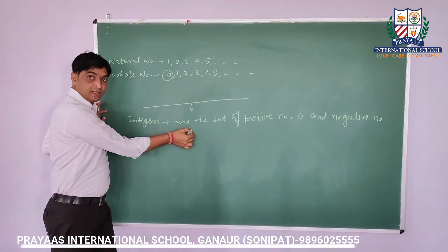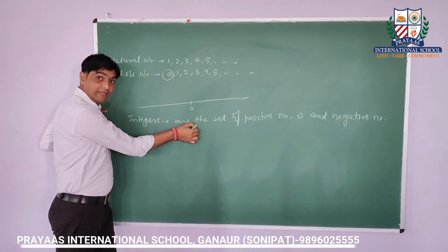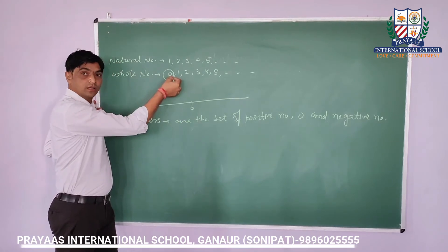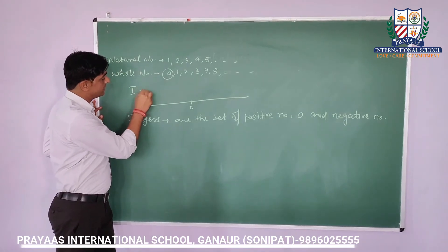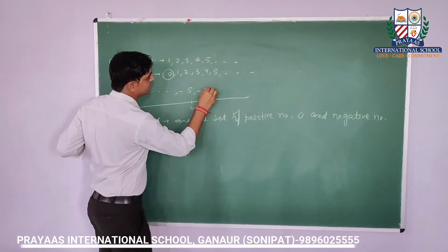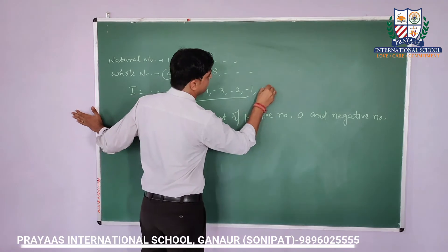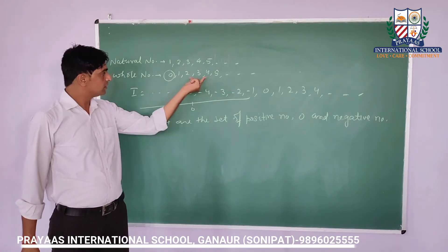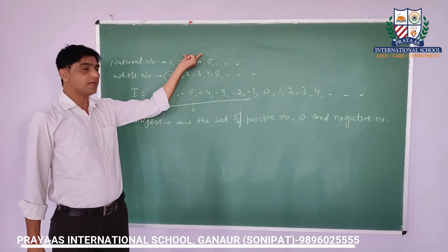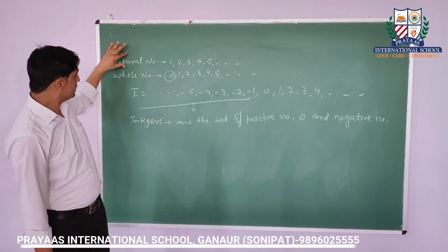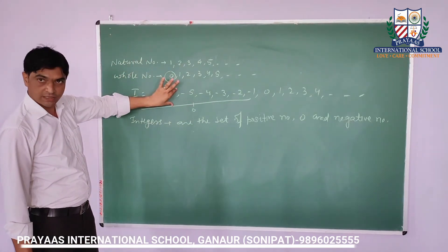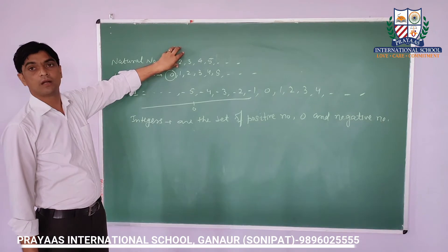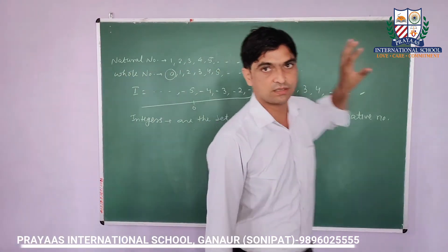All natural numbers are integers. All whole numbers are integers. But the converse need not be true — all integers are not whole numbers or natural numbers, because integers include: minus 5, minus 4, minus 3, minus 2, minus 1, 0, 1, 2, 3, 4, and so on. If I take minus 3, it is not present in the whole numbers, not present in the natural numbers. So natural numbers and whole numbers are part of integers, but the complete integer set is not part of whole numbers or natural numbers. I hope this concept is clear to all students.